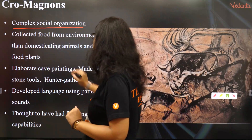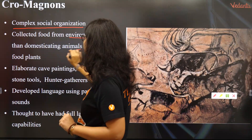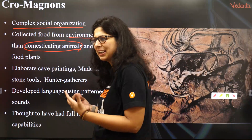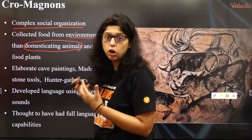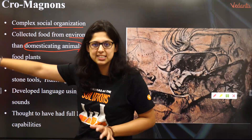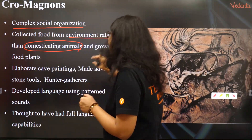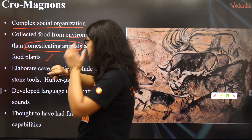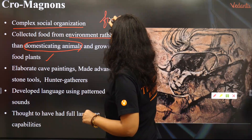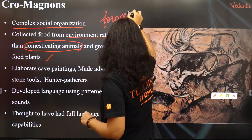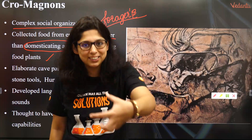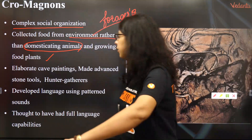They collected food from the environment. Some people domesticated animals, but generally they went out and hunted. They usually collected growing food plants — so these were foragers, basically hunter-gatherers. This is a MCQ question. They were travelers who moved from one place to another collecting food and water.